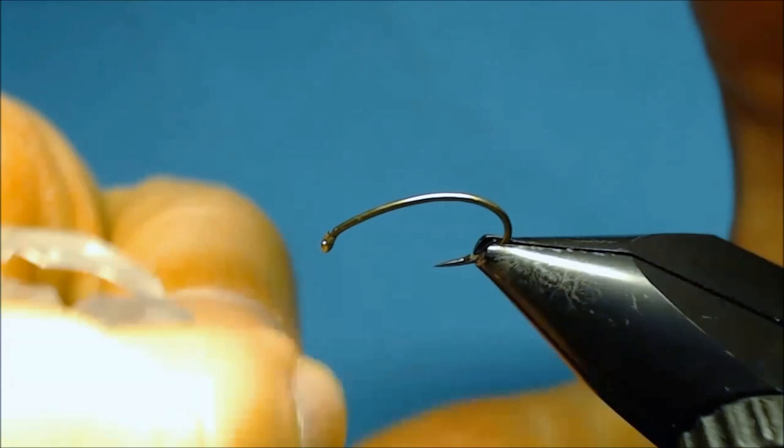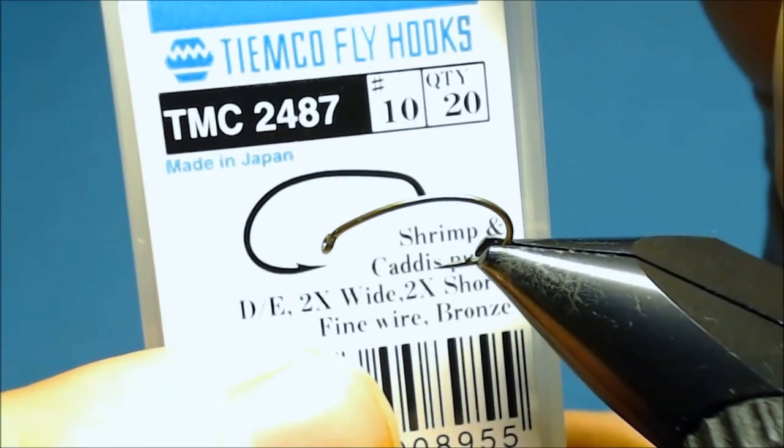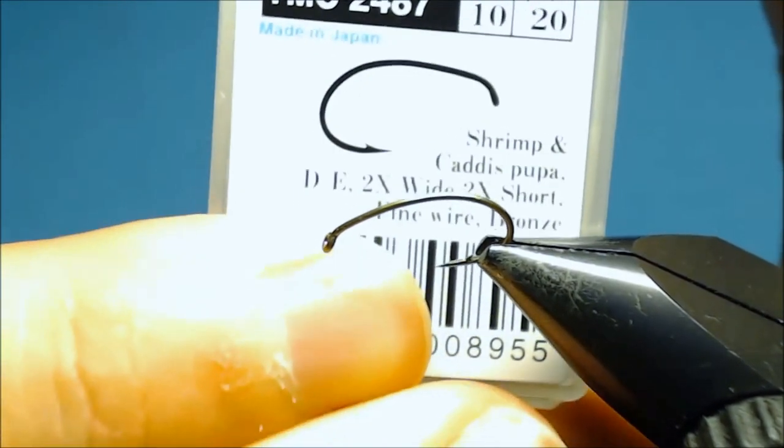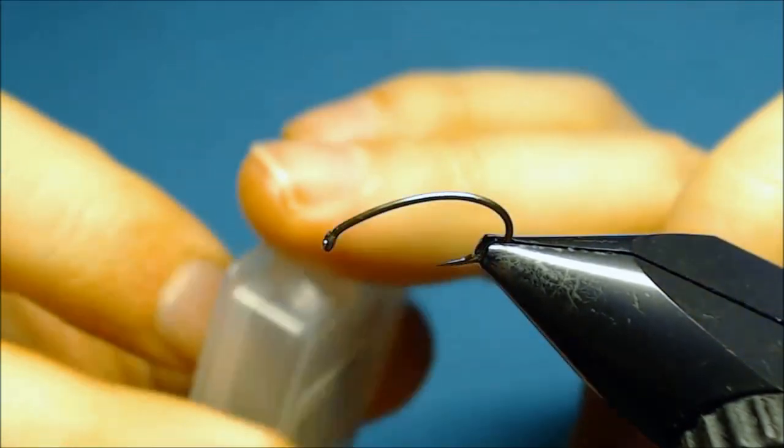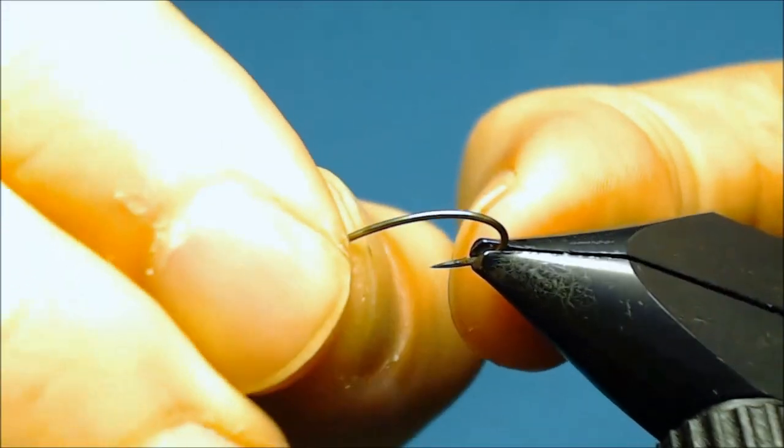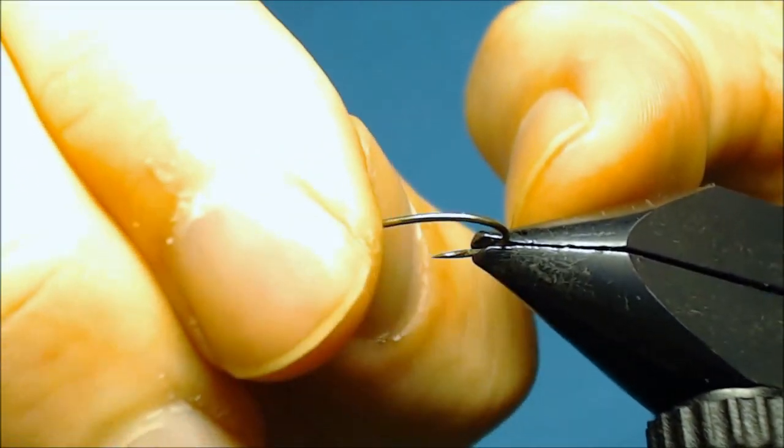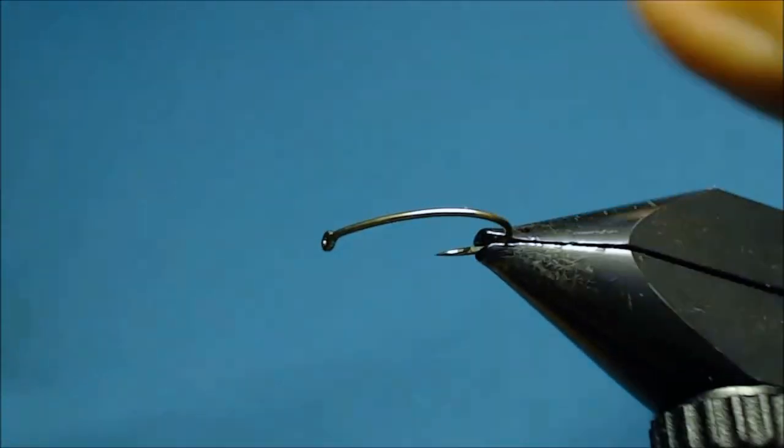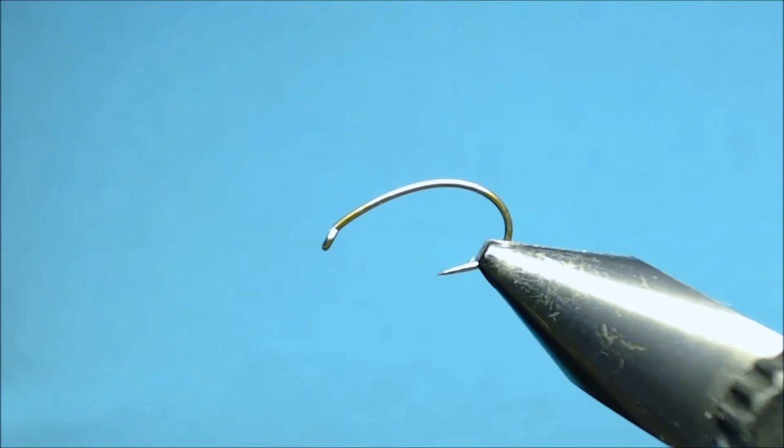The hook I've already placed in the vise is a TMCO2487. This is a standard wire hook but it works fine for Czech nymphs with this continuous bend. I like this pretty much.